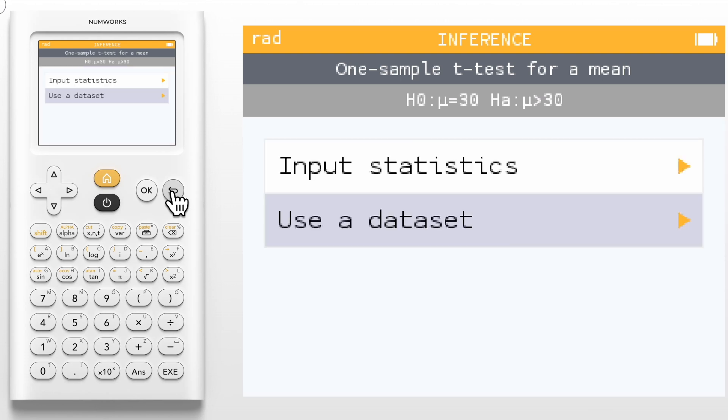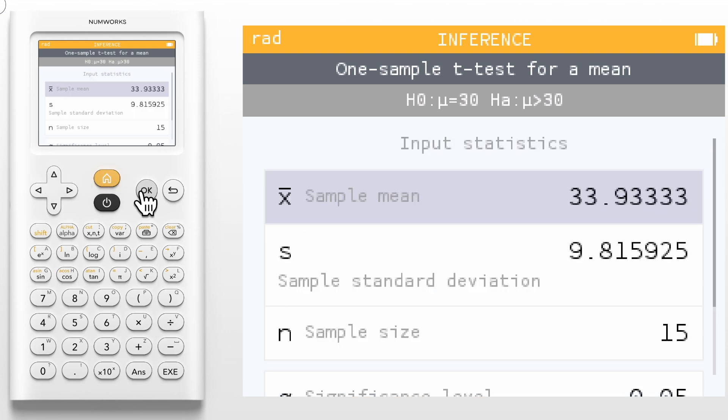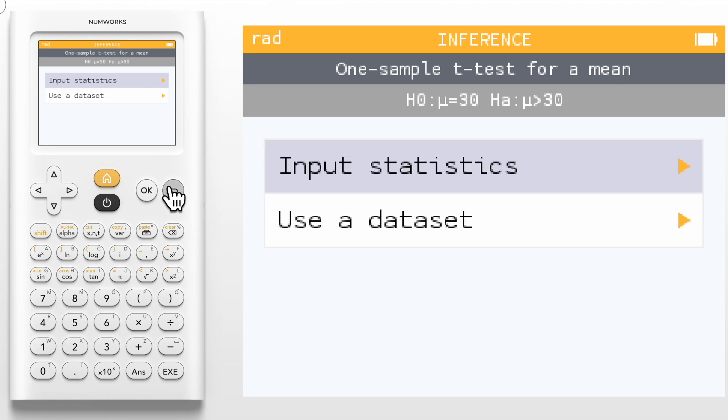Backing up three screens, let's briefly take a look at how this works with summary statistics. Press OK on Input Statistics. Notice that our summary statistics have been pulled from the dataset into the appropriate fields. These values can be edited for any new scenario. From here, the test runs the same as it did with the dataset, reporting values and displaying visuals. We can now back out of the test and return to our list of tests.